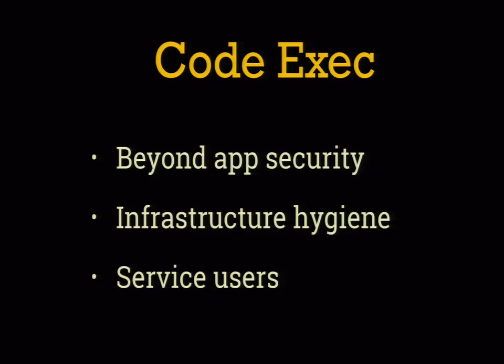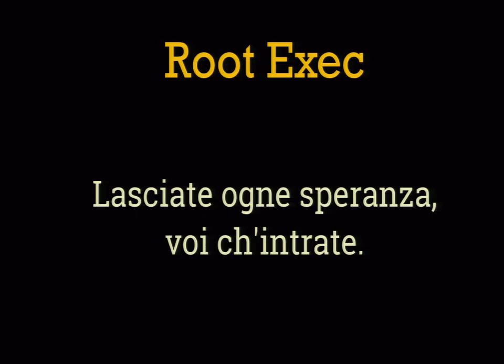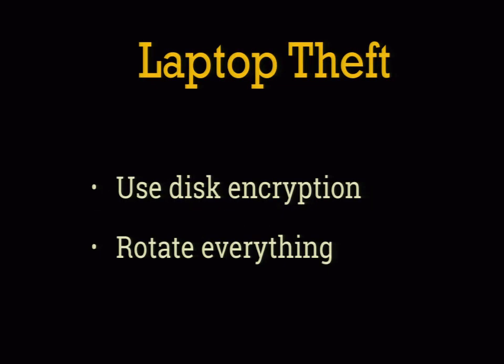Once an attacker can run arbitrary code, nothing in your application can protect access at that point — they can do whatever they want. We're really falling back on least access as our only protection. Next up: root access. When Dante passes through the gates of hell, he notes 'Abandon all hope, ye who enter here.' This is getting close to a worst-case scenario. The only thing that can keep your secret safe when they have root on a machine is dedicated security hardware. You should just assume every secret on that box is compromised and needs to be rotated.